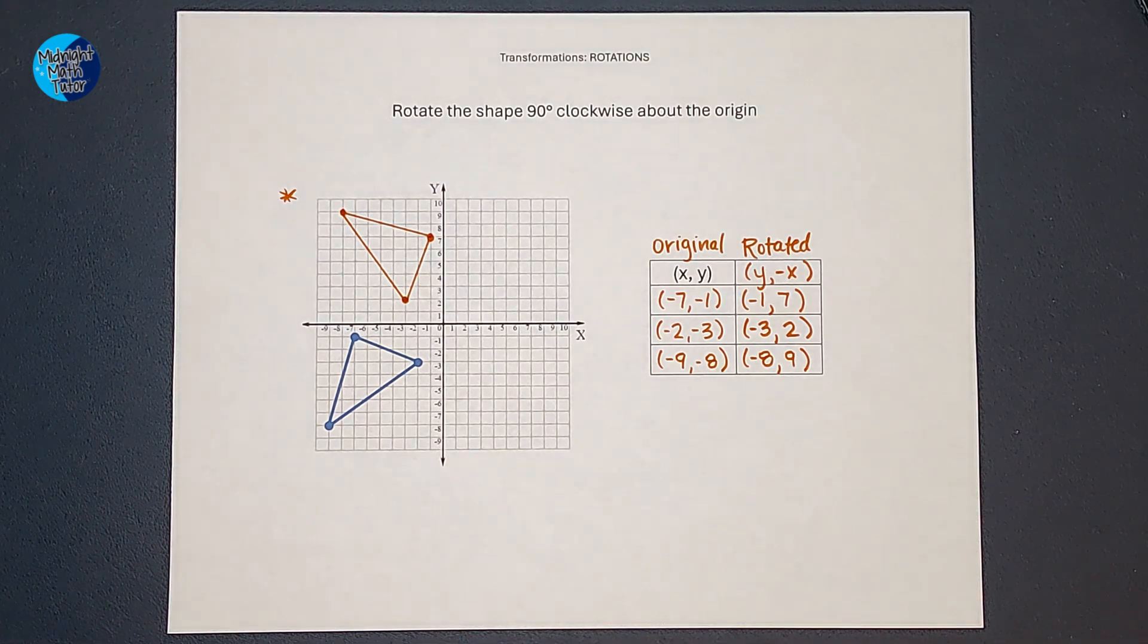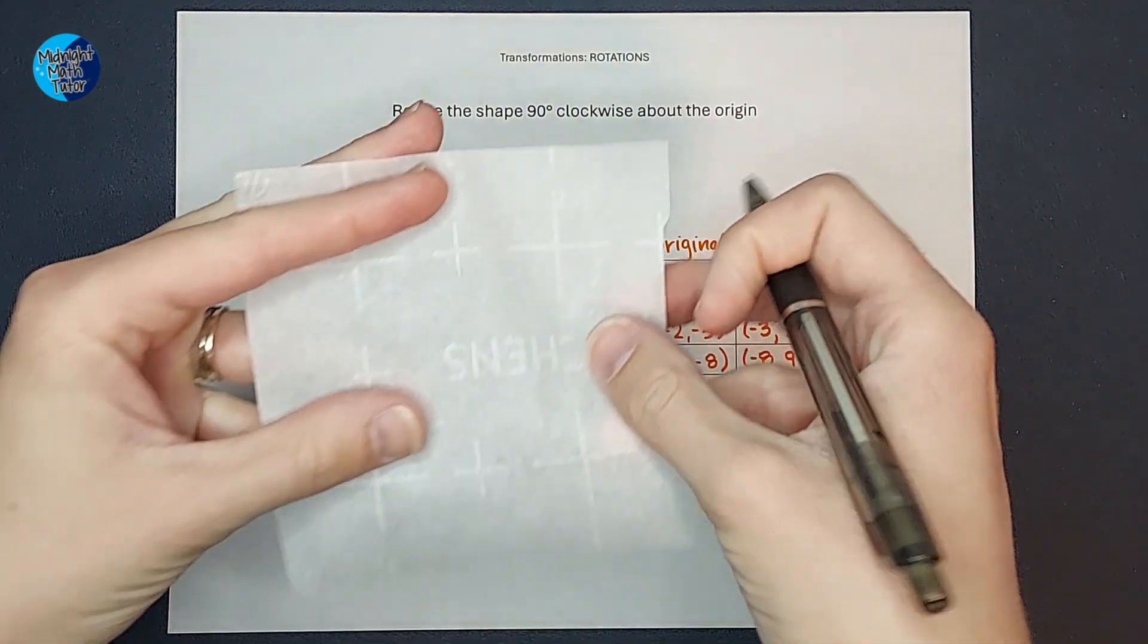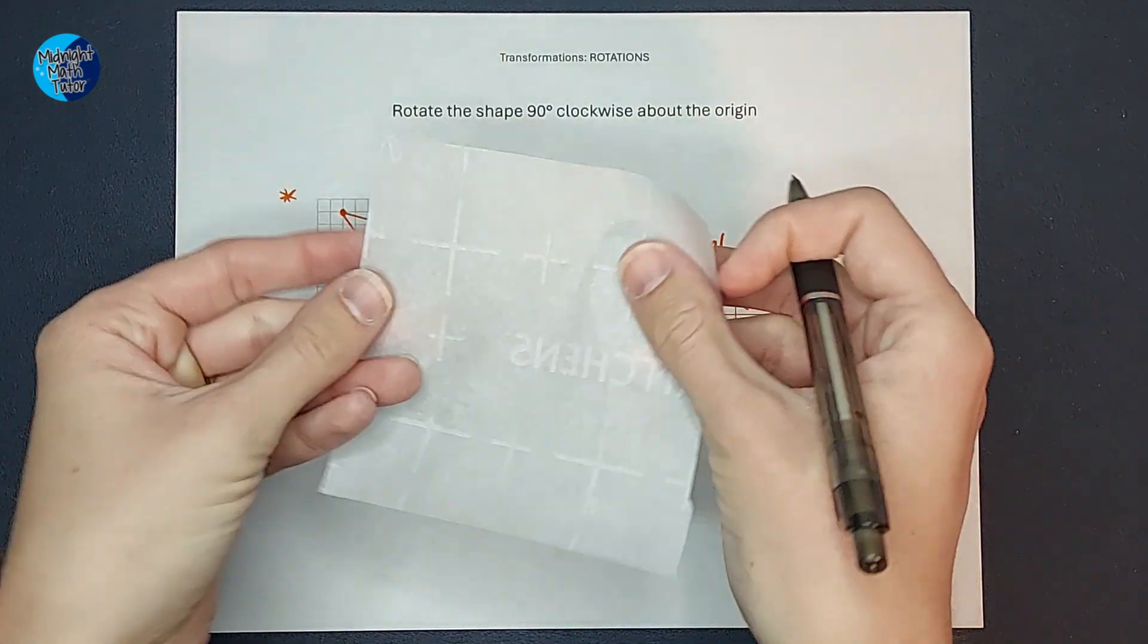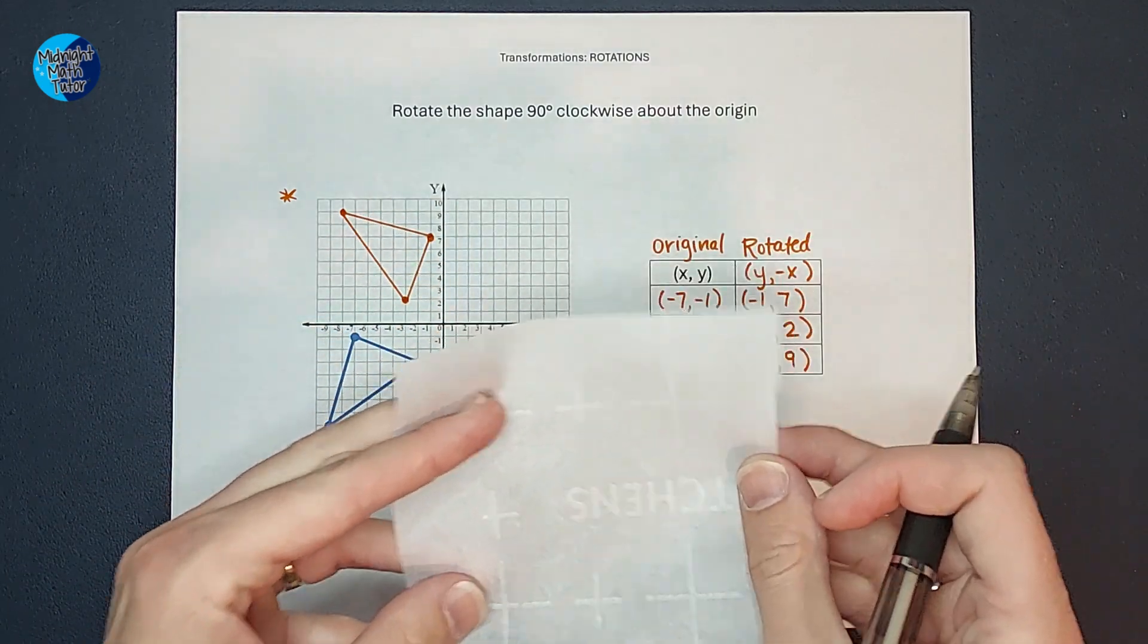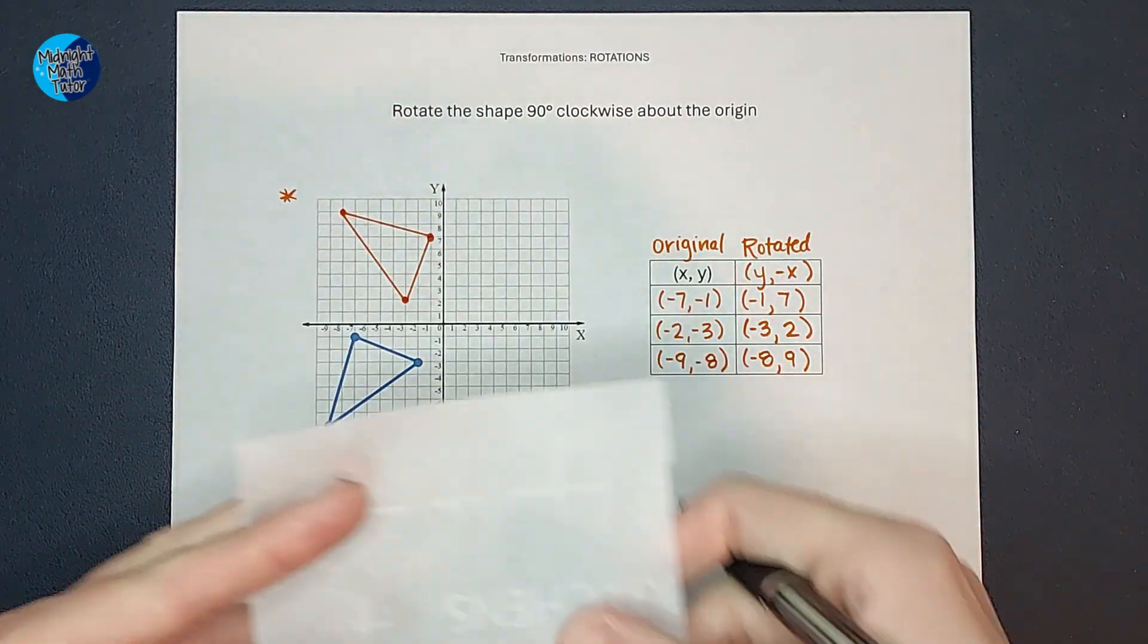Something else I like to do, this is completely optional, but I enjoy it, is I just like to take, this is legitimately just normal parchment paper I took from my kitchen, that you can like when you make cookies, you might put cookies on it. So we take this, we like it because look, it's like see-through-y.